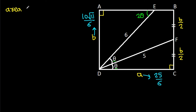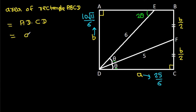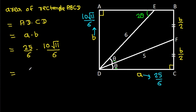The area of rectangle ABCD equals AD times CD, which is A times B. So the area is (25/6) times (10√11/6), which equals 250√11 over 36.